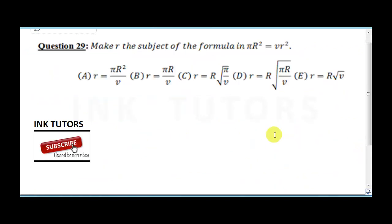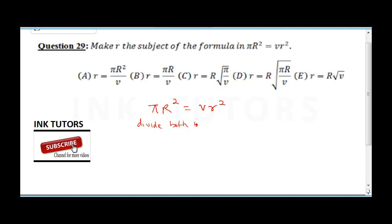Question 29 says make r the subject of the formula — another way to say 'express r'. We have pi r squared equals v r squared. To eliminate v, divide both sides by v: pi r squared over v equals r squared.